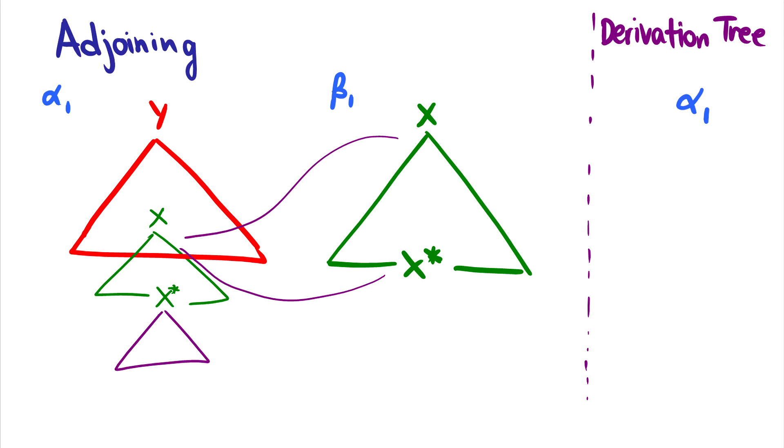So essentially we pulled out the X within our alpha 1 tree, we shoved in our auxiliary tree where it was, and then we attached the original X back to the bottom where the foot node is. And the derivation tree, much like the previous one, again because we adjoined into alpha 1, we adjoined beta 1 into alpha 1, we just say that okay beta 1 went into alpha 1. And of course, I mean this seems pretty straightforward, we usually just put them right into it. So there might be some cases where you have two auxiliary trees adjoining into alpha 1, and then maybe you also have another auxiliary tree adjoining into an auxiliary tree, and then things can get a little bit more complicated in the derivation trees.